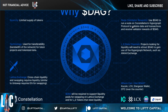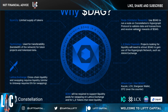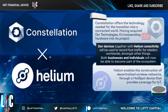For those running nodes on the Constellation DAG network, you can use DAG to run a node on the Hypergraph protocol to validate data and transactions. DAG is the native cryptocurrency on the Hypergraph network.